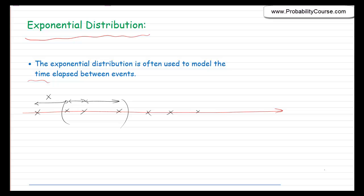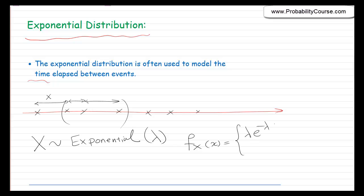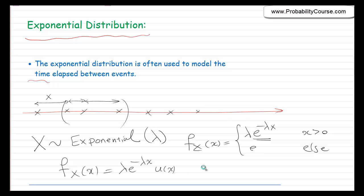Today I just want to introduce the exponential distribution and talk a little bit about its properties. So let's start by writing the probability density function of the exponential random variable. When X is exponential, we write it like this: X is distributed exponentially with parameter lambda. So if X is exponentially distributed with parameter lambda, then its probability density function is given by lambda times e to the minus lambda x for positive values of x, and is zero otherwise. So it's a positive random variable, and as you can see the PDF has an exponential form, which is why it is called the exponential distribution. We sometimes write the PDF as lambda e to the minus lambda x times u of x, where u is the unit step function, just for simplicity.